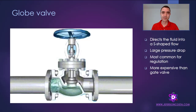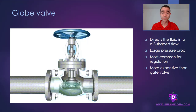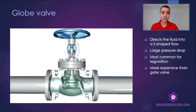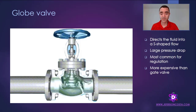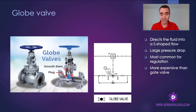Now let's take a look at the globe valve. The globe valve is one of the most used valves for controlling fluids in the industry. One of its characteristics is a large pressure drop, because instead of having the full bore of the pipeline available when fully open, the fluid must take a different route through the valve. The fluid passes around the plug and travels from the bottom to the top.